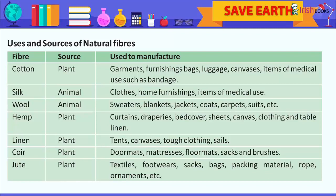Wool — source: animal; used to manufacture: sweaters, blankets, jackets, coats, carpets, suits, etc. Hemp — source: plant; used to manufacture: curtains, draperies, bed cover, sheets, canvas, clothing and table linen.